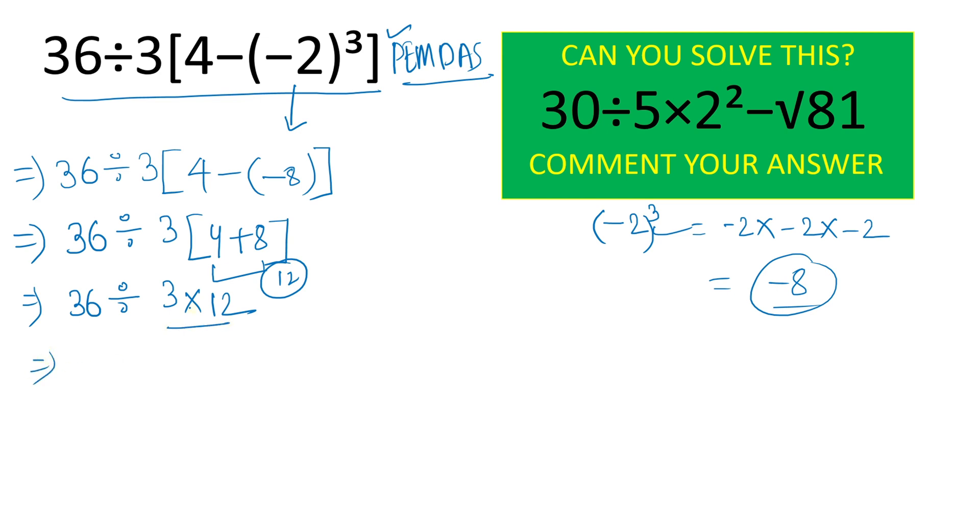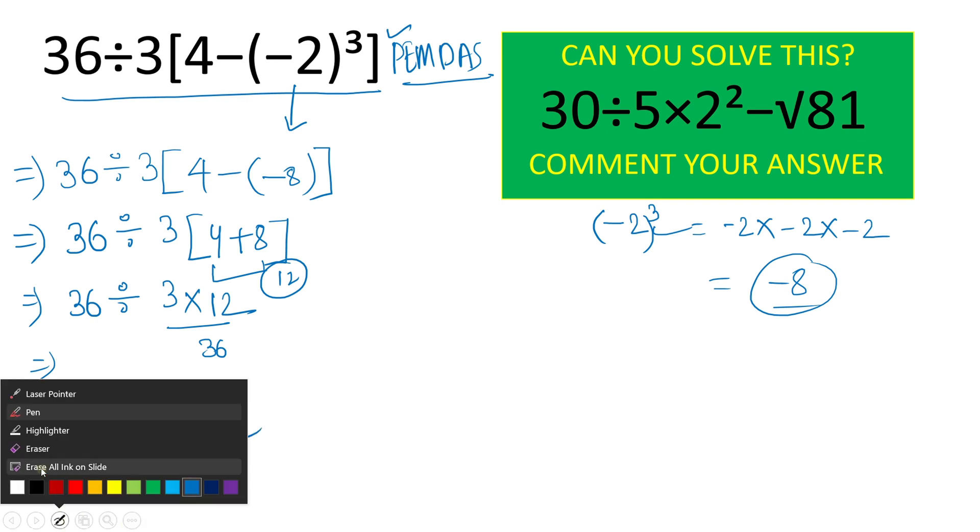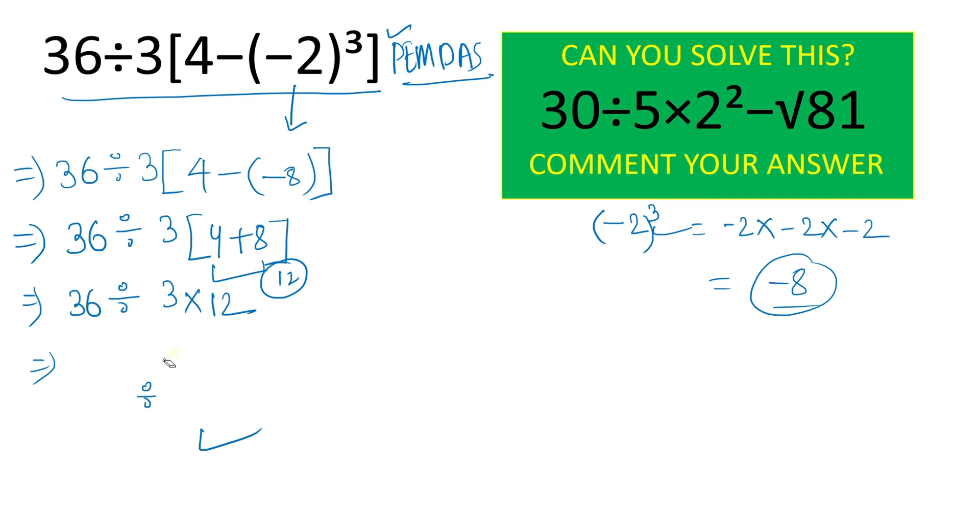Now, if you are solving like 12 times 3 that is equal to 36, and 36 divided by 36 which gives result 1, and you are thinking this is the right answer, this is the wrong answer.